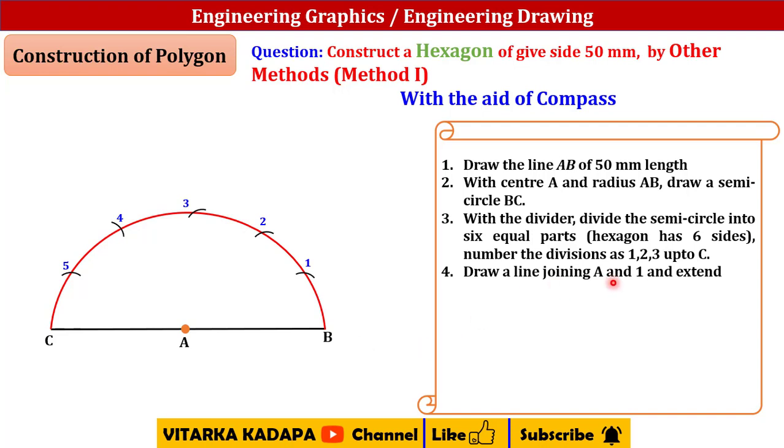Now draw a line joining A1 and extend. So I have to join this line up to some length. Similarly A2 and extend, A3 and extend, A4 and extend. So up to 4 we required, but this last line we don't consider for now.